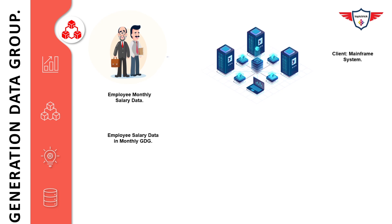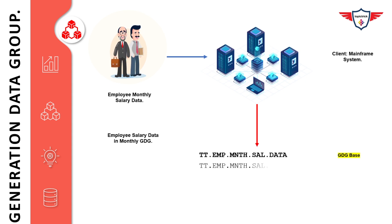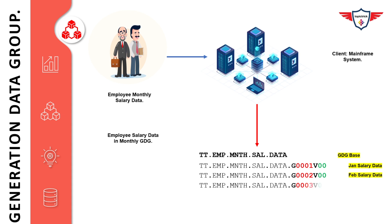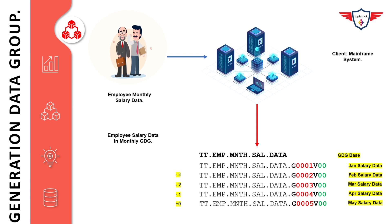A Generation Data Group or GDG is a collection of two or more chronologically related versions of the same data set. They are generally used to maintain the backup of critical data, for example, monetary transactions.